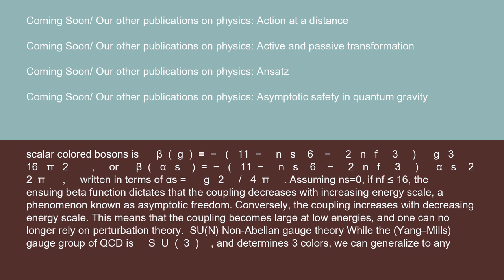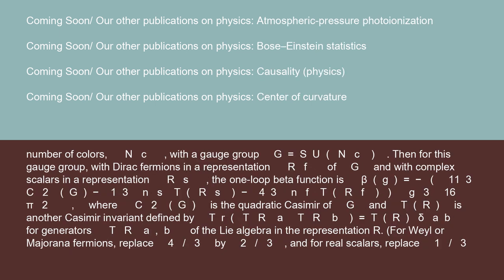SU(N) non-abelian gauge theory: While the gauge group of QCD is SU(3) and determines three colors, we can generalize to any number of colors N_C, with a gauge group G = SU(N_C).